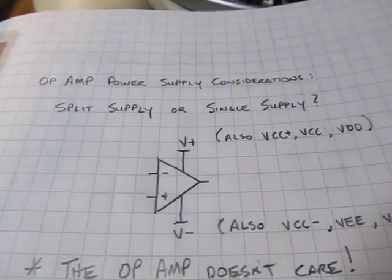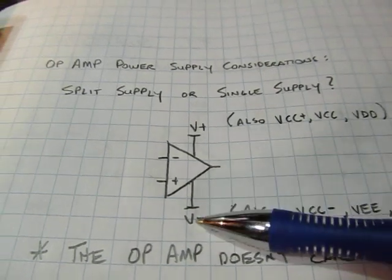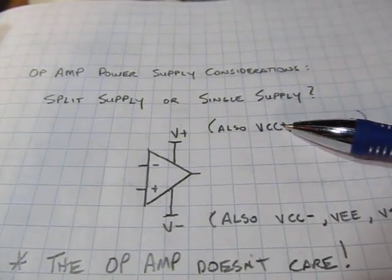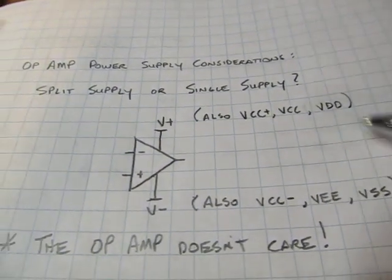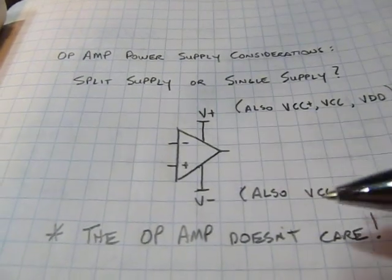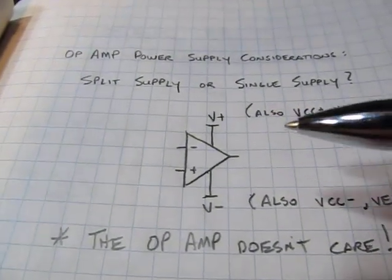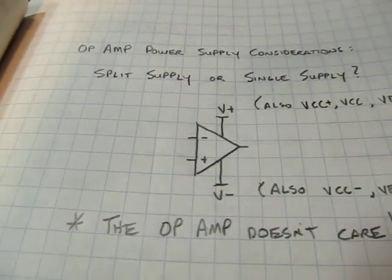Most times when you look at an op-amp, the power supply connections are often labeled V plus and V minus. Sometimes they're labeled VCC plus and VCC minus or VCC and VE and VDD and VSS. But it's typically labeled in this way because most of the times op-amps or many op-amps are specified for a split supply operation, so neither of them are called ground.